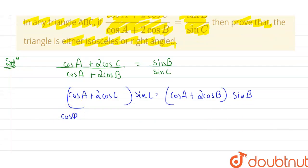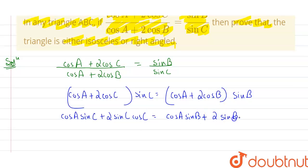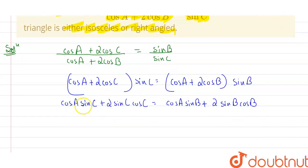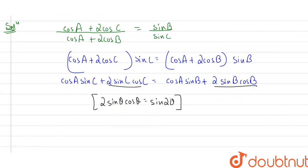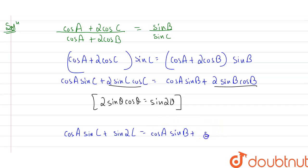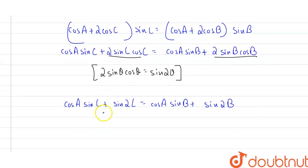We know the property that 2sinθcosθ = sin2θ. So the terms 2sinC·cosC and 2sinB·cosB can be written as sin2C and sin2B respectively. The equation becomes: cosA·sinC + sin2C = cosA·sinB + sin2B.